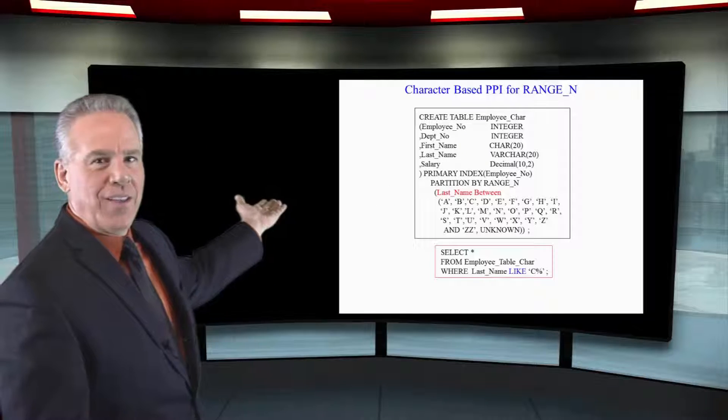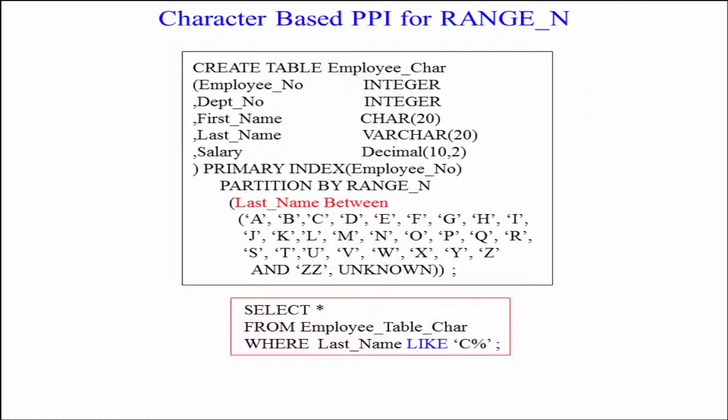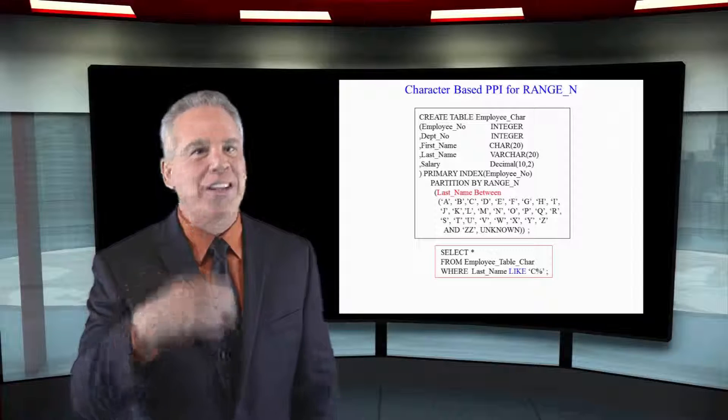We're partitioning by the last name in a RANGE_N, but we're going to partition where last name starts with A or B or C all the way through the alphabet. And if it's null, it goes in the unknown.